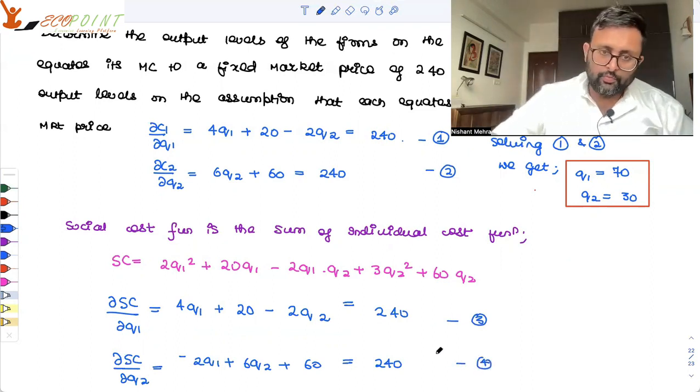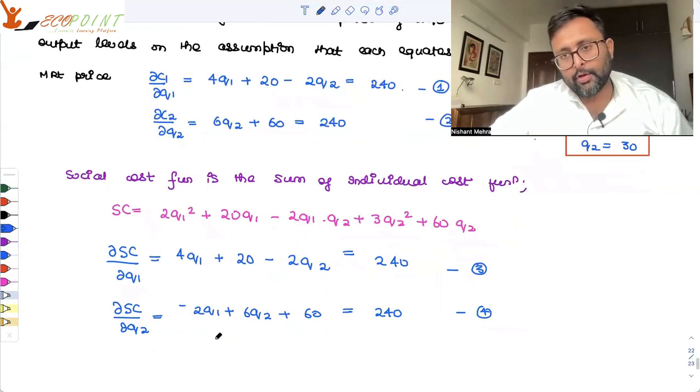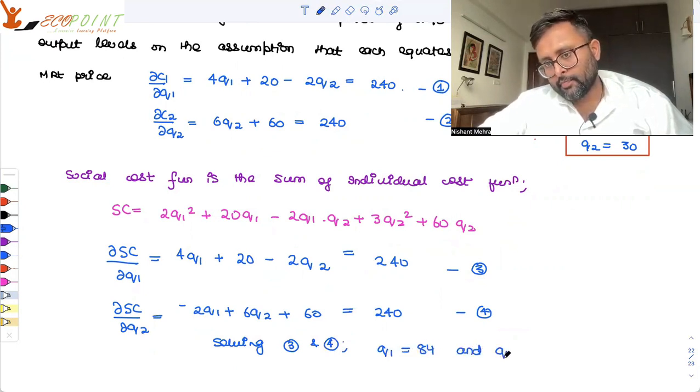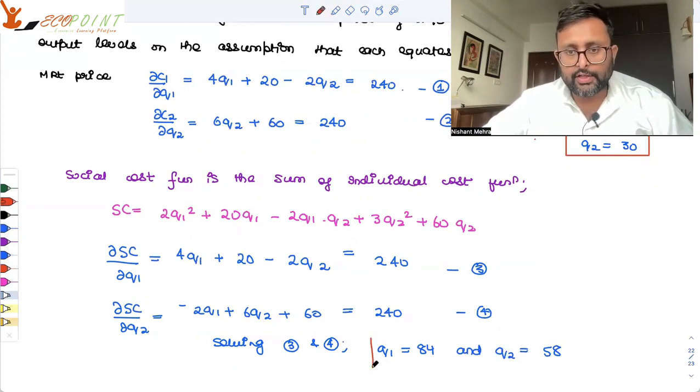So, solving 1 and 2, or 3 and 4, you'll be getting Q1 as 84 and Q2 as 58. Q1 as 84 and Q2 as 58.